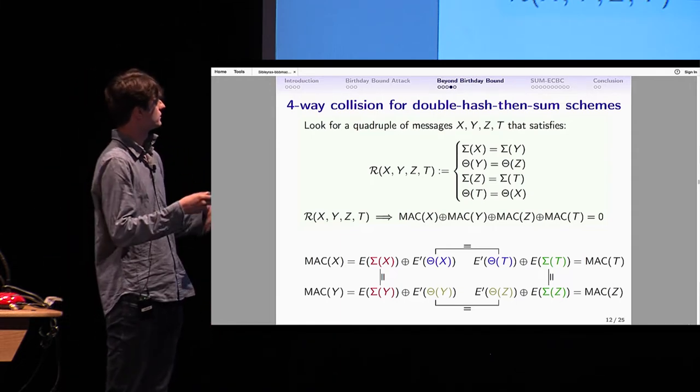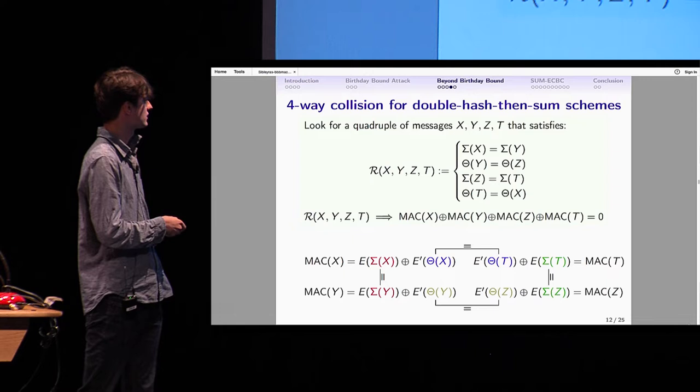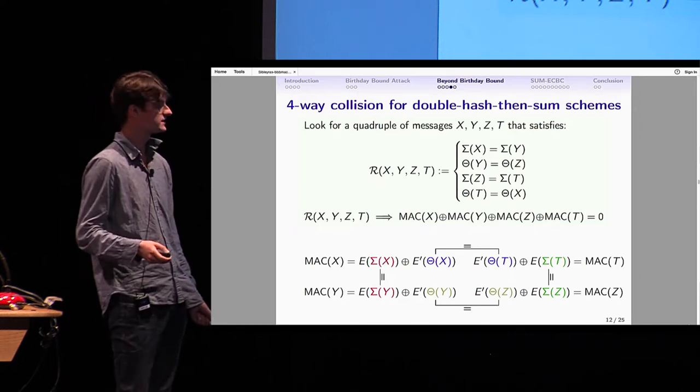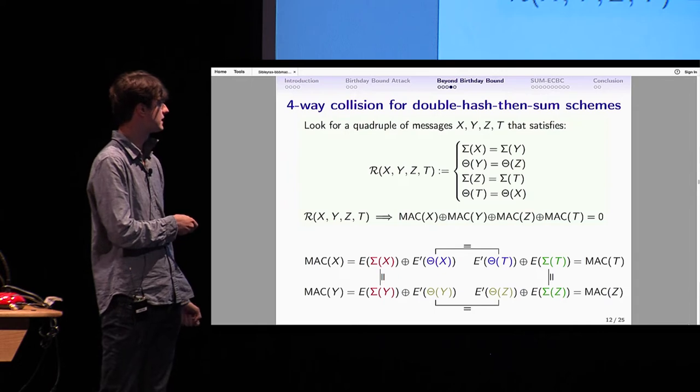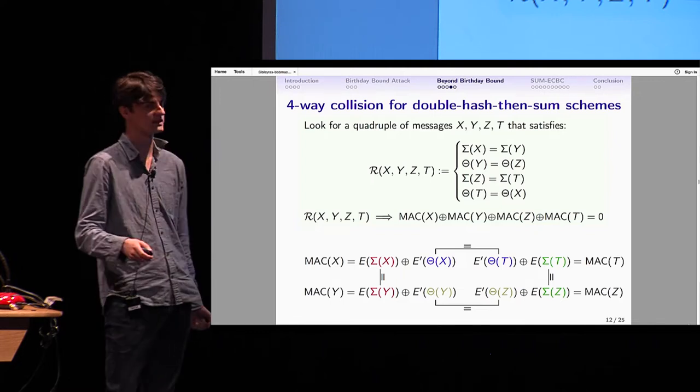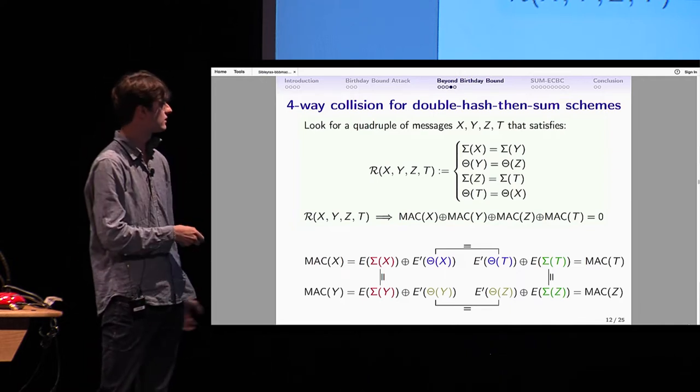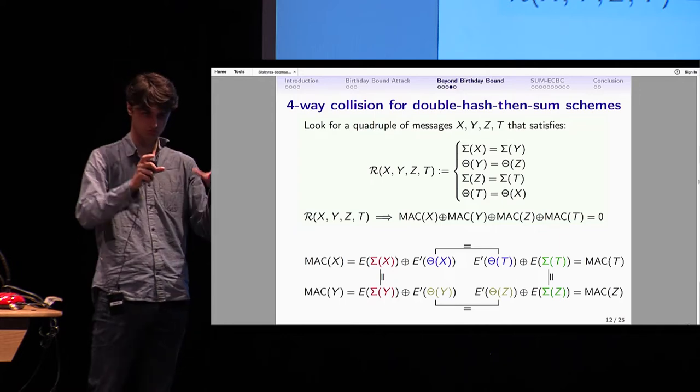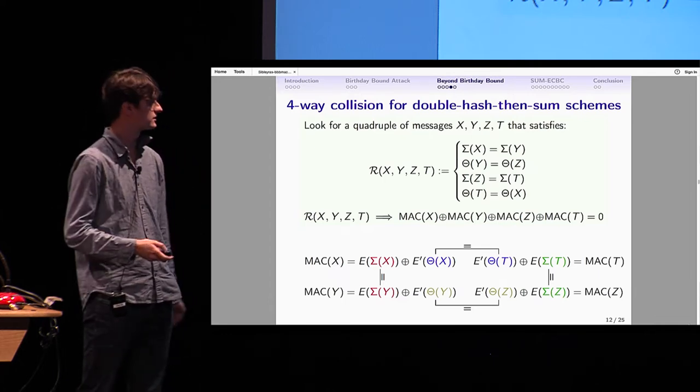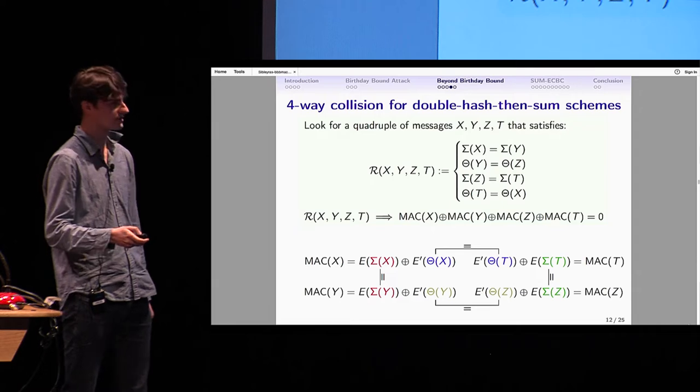How does that happen? If you look at double hashed-then-sum schemes, you can always write the MAC like this: some transformation of σ(X) XOR some transformation of θ(X). Same for MAC of Y, T, Z. If you have a relation R, like σ(X) = σ(Y), then the transformation of σ(X) equals the transformation of σ(Y). Same for transformation θ(Y), transformation θ(Z). You get this kind of alternating path of length four, and when summing all the MACs together, the values will cancel each other two by two, and you get zero. For all the schemes, it works like that. You look for this relation R, find this quadruple to attack the schemes.